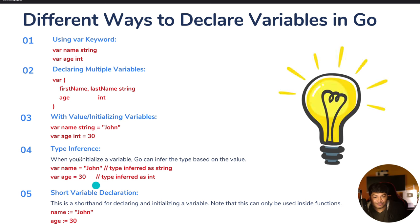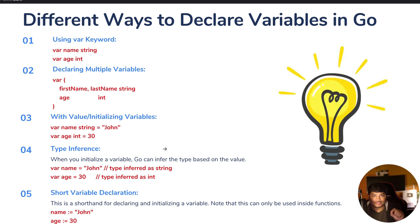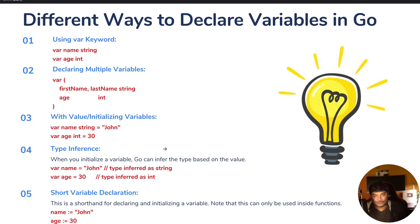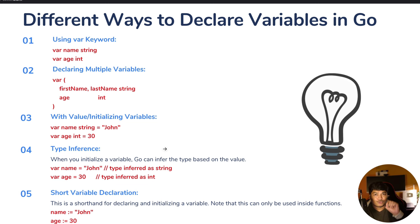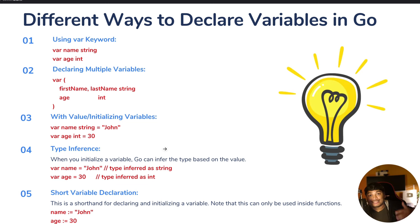The fifth way is short variable declaration using the colon-equals operator. Here Go automatically detects the data type and you don't have to use the var keyword. Simply give the variable name — name, age, address, whatever — then colon-equals, then the value, and based on the value Go will automatically detect the variable's data type. These are the different ways you can define variables in Go.